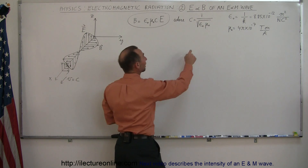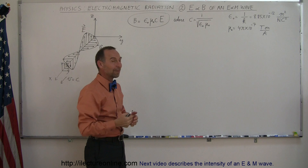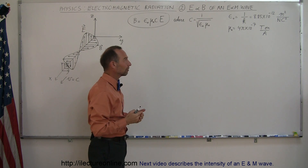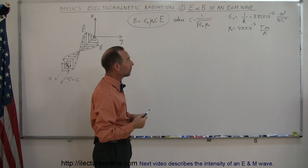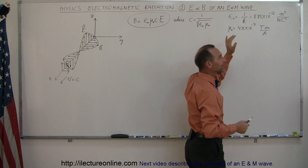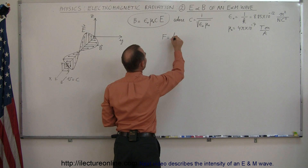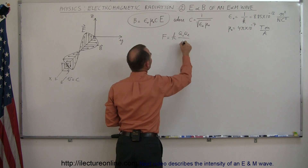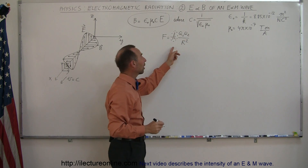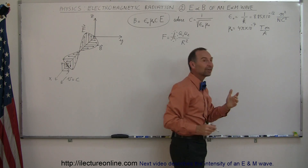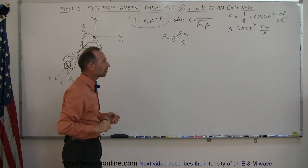Maxwell discovered that the speed of light is equal to one over the square root of epsilon sub-naught times mu sub-naught, which was quite a discovery. Mathematically, he understood how to calculate the speed of light, and that was later proven with experiments. Epsilon sub-naught is equal to one over k. From Coulomb's law, the force between two charged objects equals k times the product of the two charges divided by the distance squared. Taking the inverse of that constant gives us the permittivity of free space.